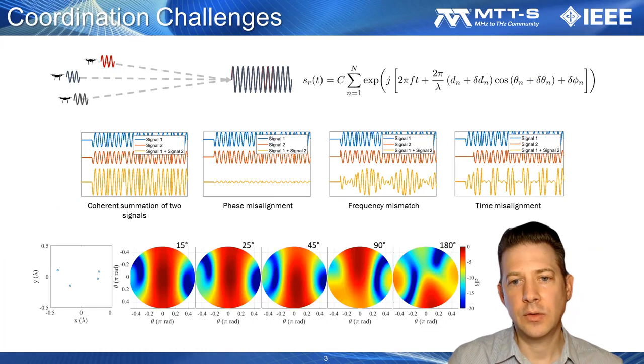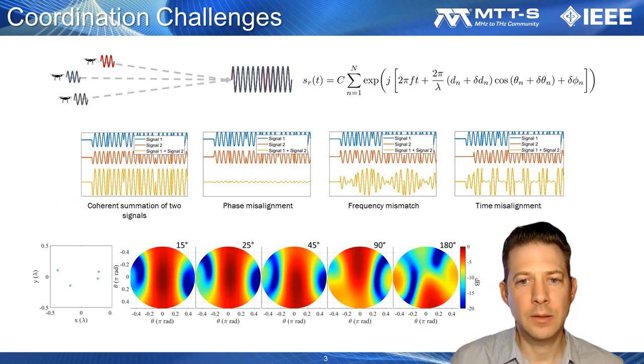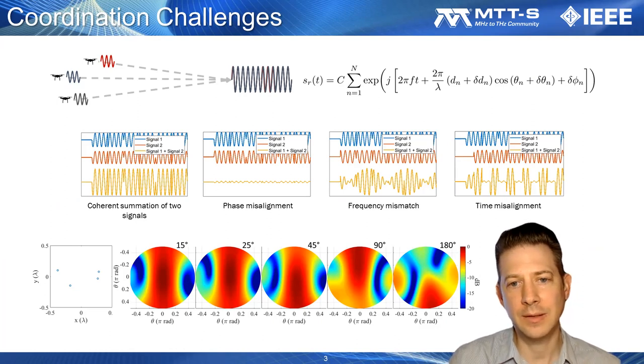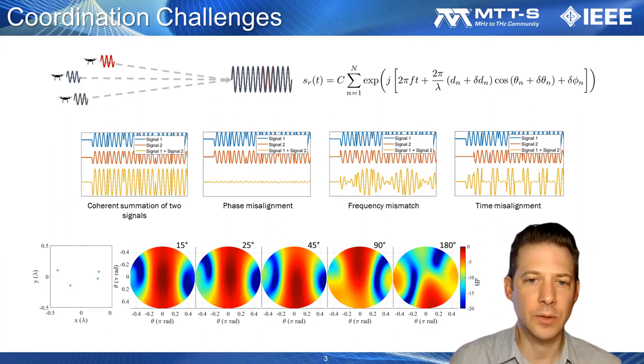Coordinating the operations of nodes in a distributed array requires accurate control of the relative electrical states of the nodes. Fundamentally, the signals emitted by a distributed phased array must arrive at the destination aligned in time and in phase, and to ensure that the signal maintains a high gain over time, they must be at the same frequency.